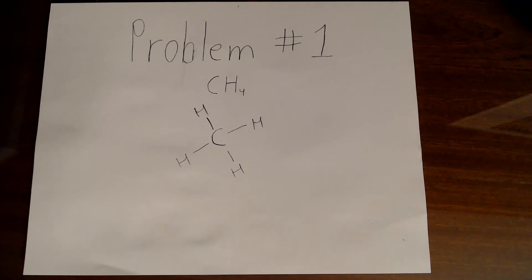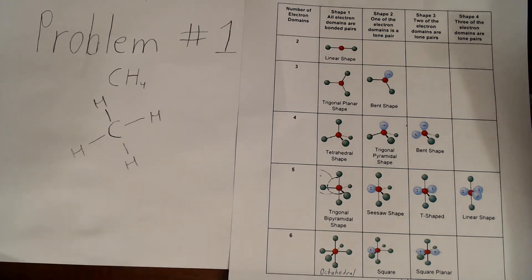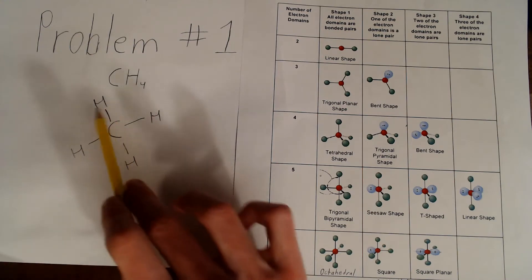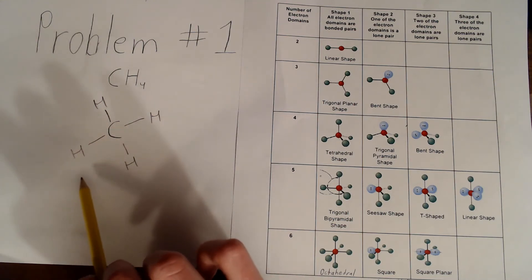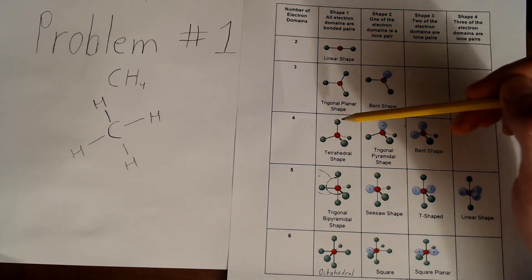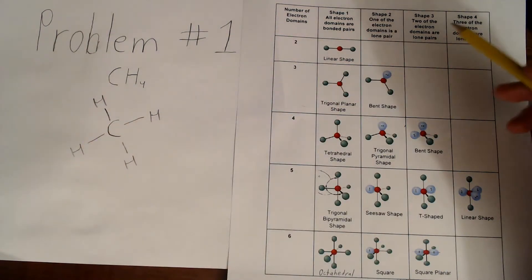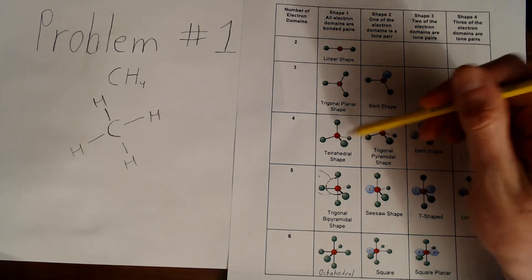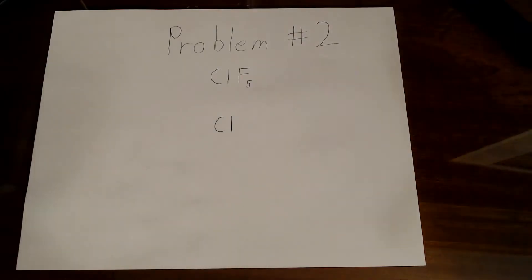Now that we have our Lewis structure for methane, we can use our table of VSEPR structures to find its VSEPR shape. Here's a table of VSEPR structures which we'll be using to find the shape. In this case, the methane molecule's Lewis structure has 1, 2, 3, 4 electron domains. This corresponds to the tetrahedral shape. All of these electron domains are bonded electron domains, just like in the tetrahedral shape, meaning that the shape of this molecule will be tetrahedral.